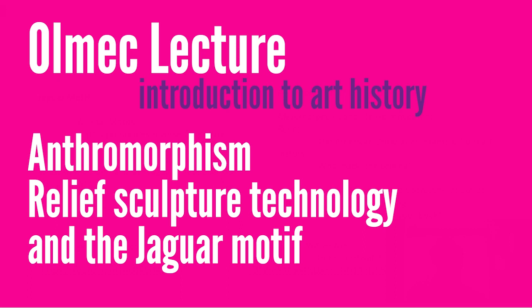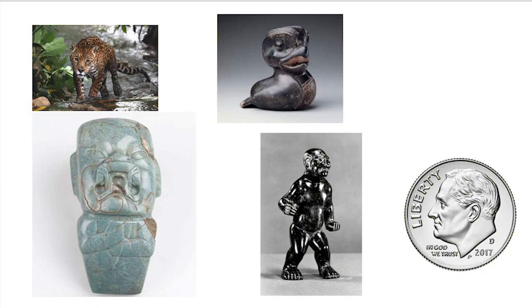This talk is about the animal and specifically the jaguar motif in Olmec art. As an introductory art historical talk, it's useful to mention that around the world, animals are anthropomorphized in ancient cultures. With many artworks we see these kind of human-animal forms — in masks, sculptures, monuments, gargoyles, or reliefs — this idea of an animal-human form is a very rich part of art history.